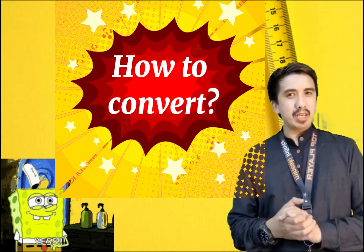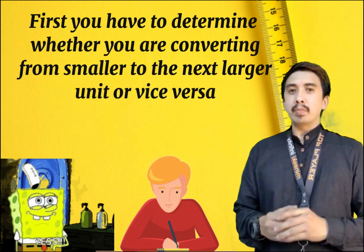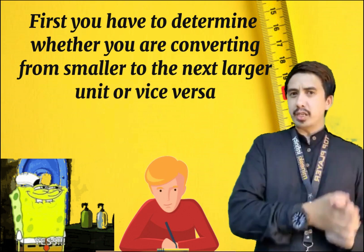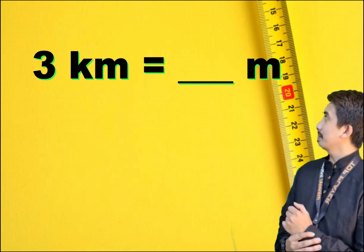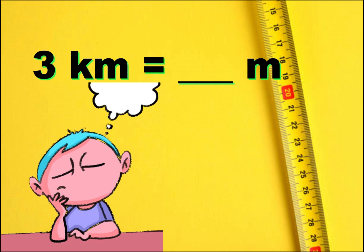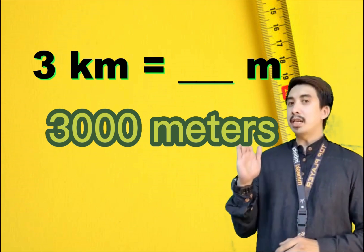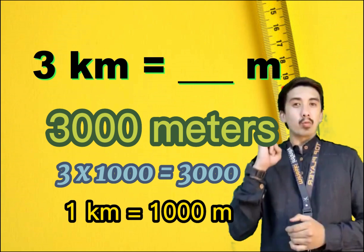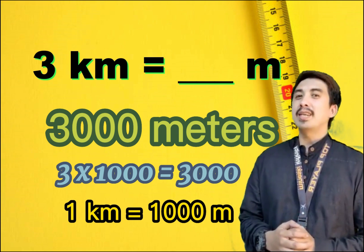How do we convert? First, you have to determine whether you are going to convert a smaller unit to the next larger unit, or vice versa. For example: 3 kilometers is equal to how many meters? It's 3,000 meters, because it's 3 times 1,000. We know that 1 kilometer is equivalent to 1,000 meters, so 3 times 1,000 is 3,000.